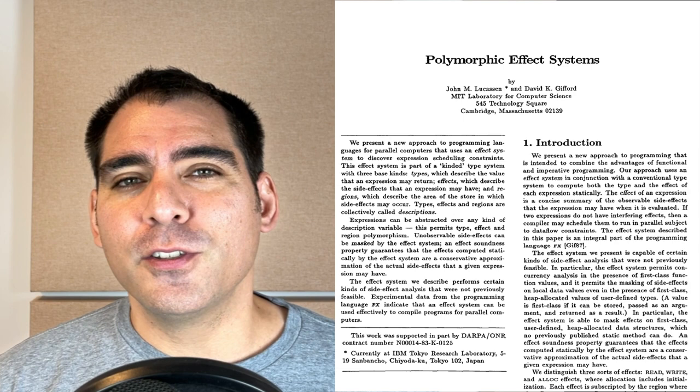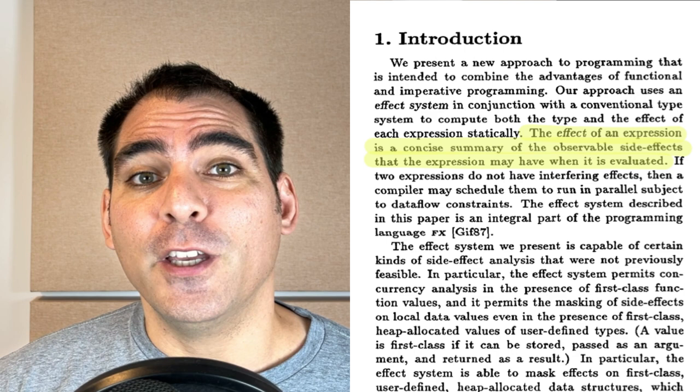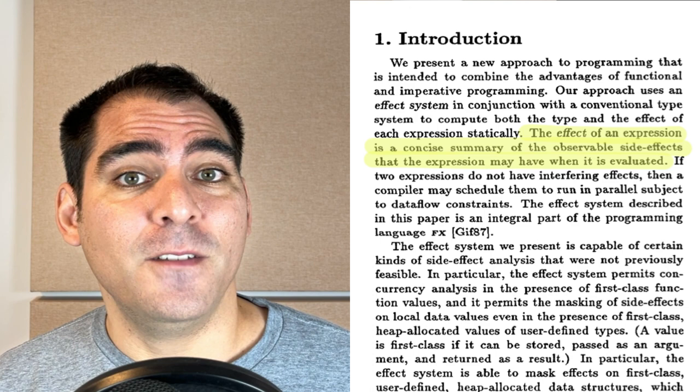To understand that, we first need to understand what an effect is. A nice definition of an effect is given in the paper 'Polymorphic Effect Systems' by Lucassen and Gifford. The definition says: the effect of an expression is a concise summary of the observable side effects that the expression may have when it is evaluated. For example, if we have an expression to print text to the console, the observable side effect is that text is appended to the console. So the effect — a concise summary — would be 'write to the console,' or more generally, input/output.